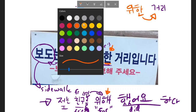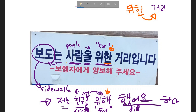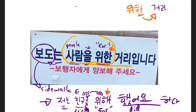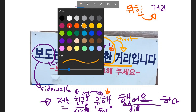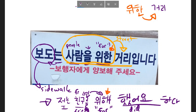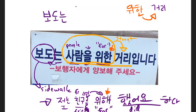This whole construction of 사람을 위한 거리 — this whole section is really describing the noun 거리, which means street or road. So it's just 'a street.' If you wanted to simplify this sentence, you could say something like 보도는 거리입니다. What I've done is taken the subject of the sentence and eliminated everything in the middle, literally saying: sidewalk is a street.